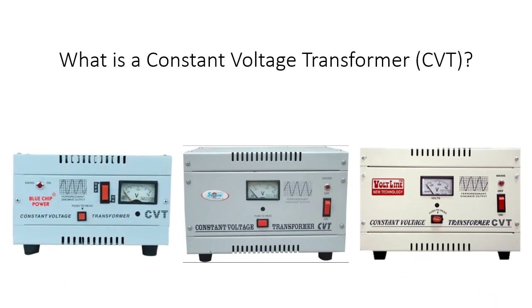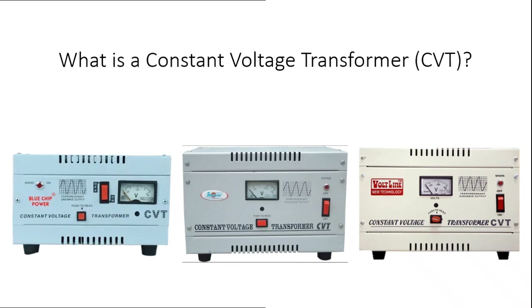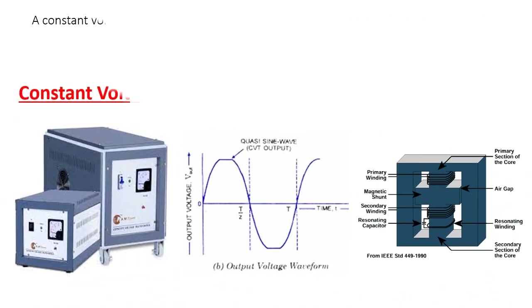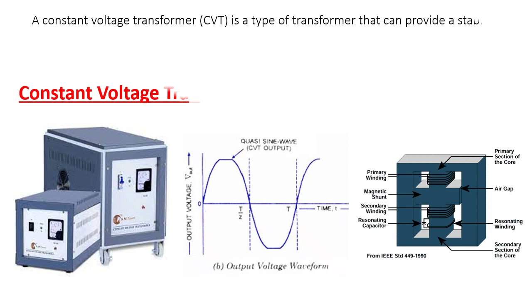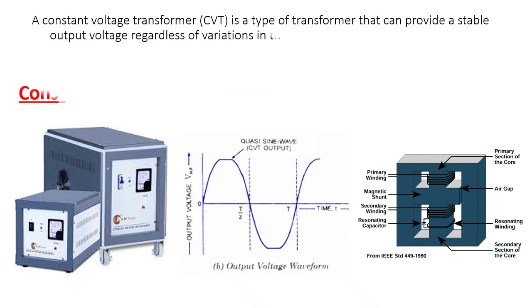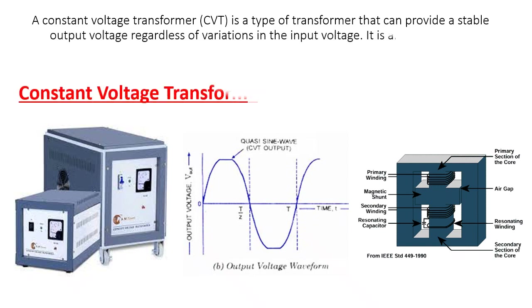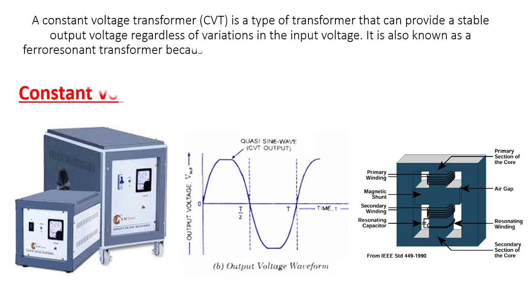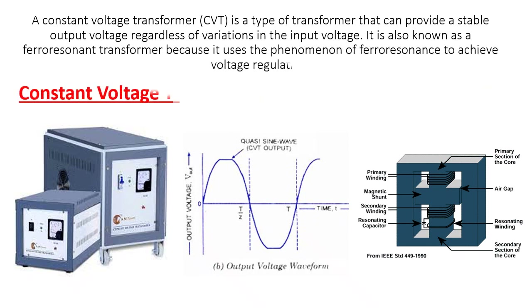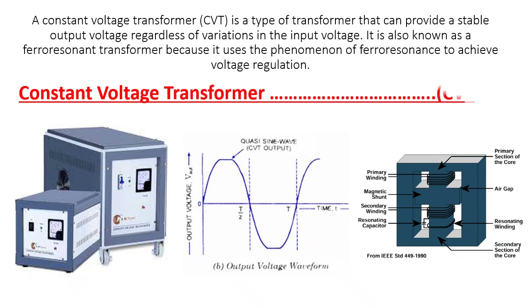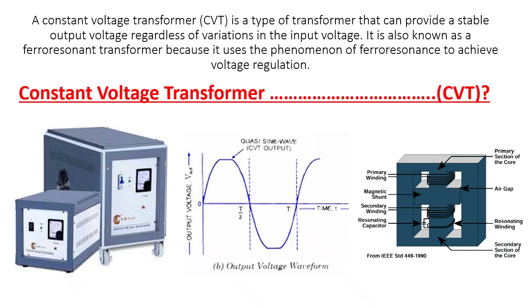What is a constant voltage transformer, or CVT? A constant voltage transformer is a type of transformer that can provide a stable output voltage regardless of variations in the input voltage. It is also known as a ferroresonant transformer because it uses the phenomenon of ferroresonance to achieve voltage regulation.